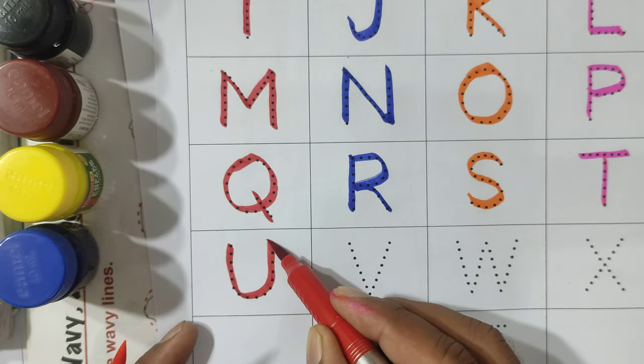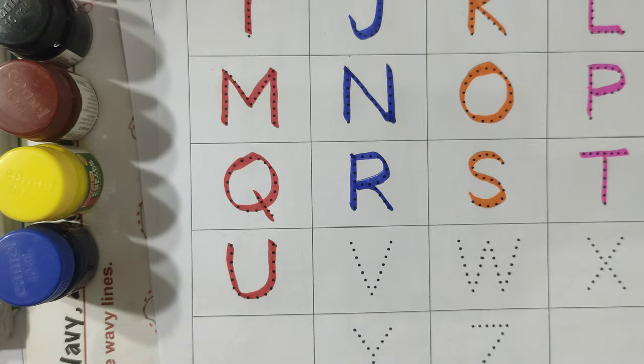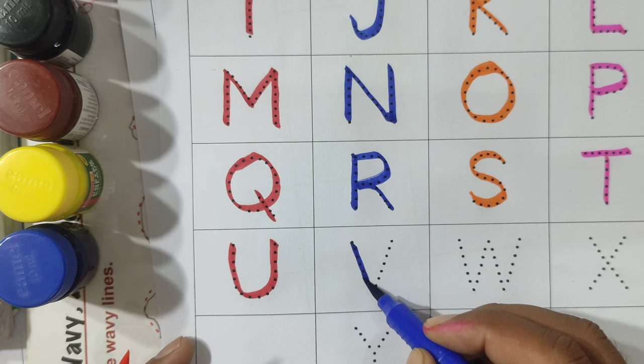U. U for Umbrella. Umbrella means Chata. V.